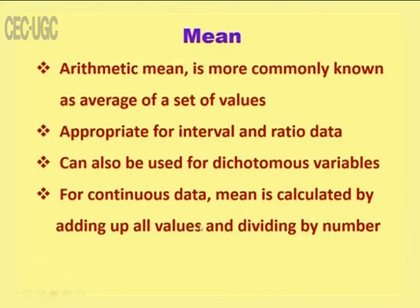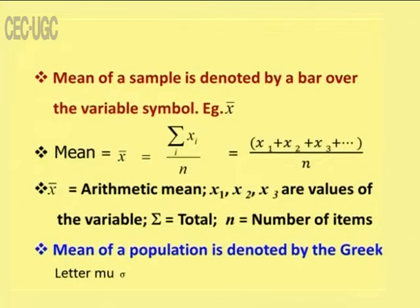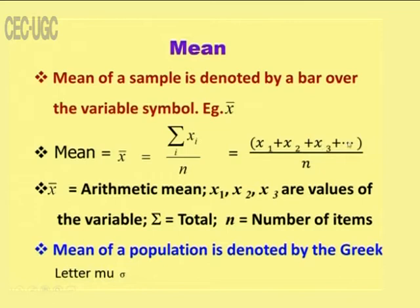The arithmetic mean can be calculated in many situations. For continuous data, the mean is calculated by adding up all values and dividing by the number of values. The mean of a sample is denoted by x-bar, where x-bar equals the summation of x divided by n. This means we add all the values from x1 plus x2 plus x3 and so on, divided by n. The mean of a population is denoted by the Greek letter mu.